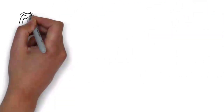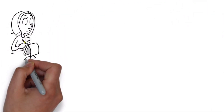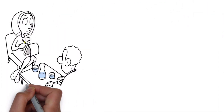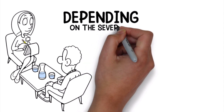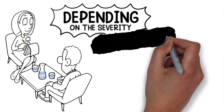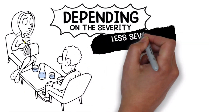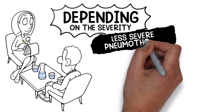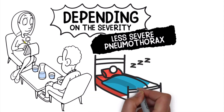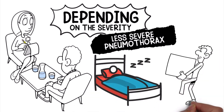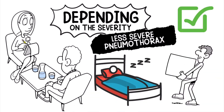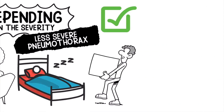The treatment methods for a pneumothorax will also vary from patient to patient depending on the severity of their signs and symptoms. For example, a small less severe pneumothorax may only require bed rest and limited physical activity in order for it to be resolved.